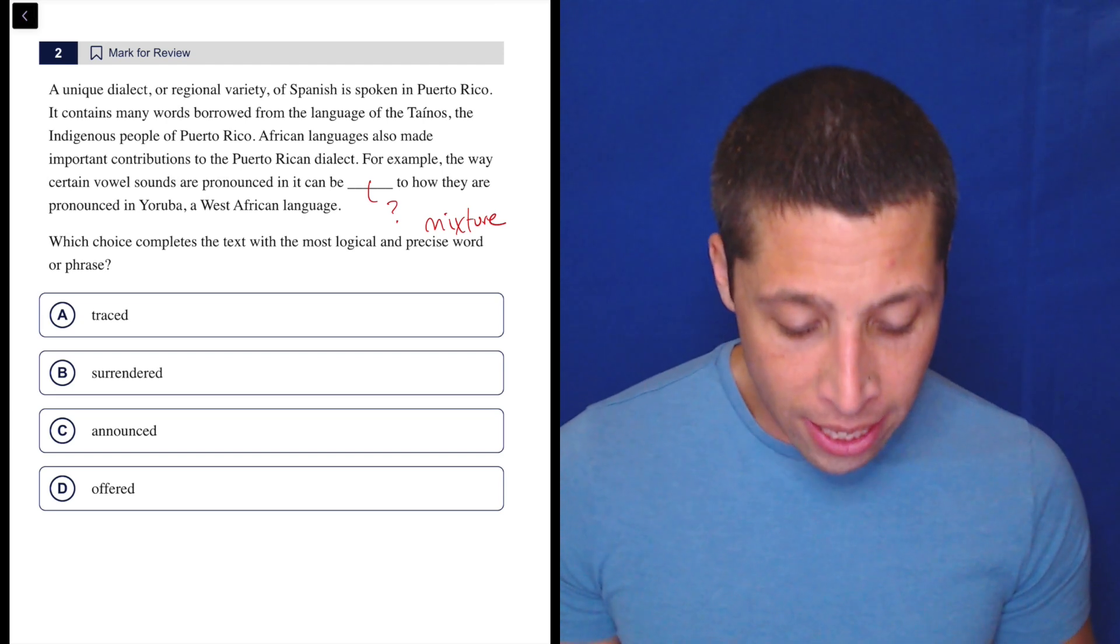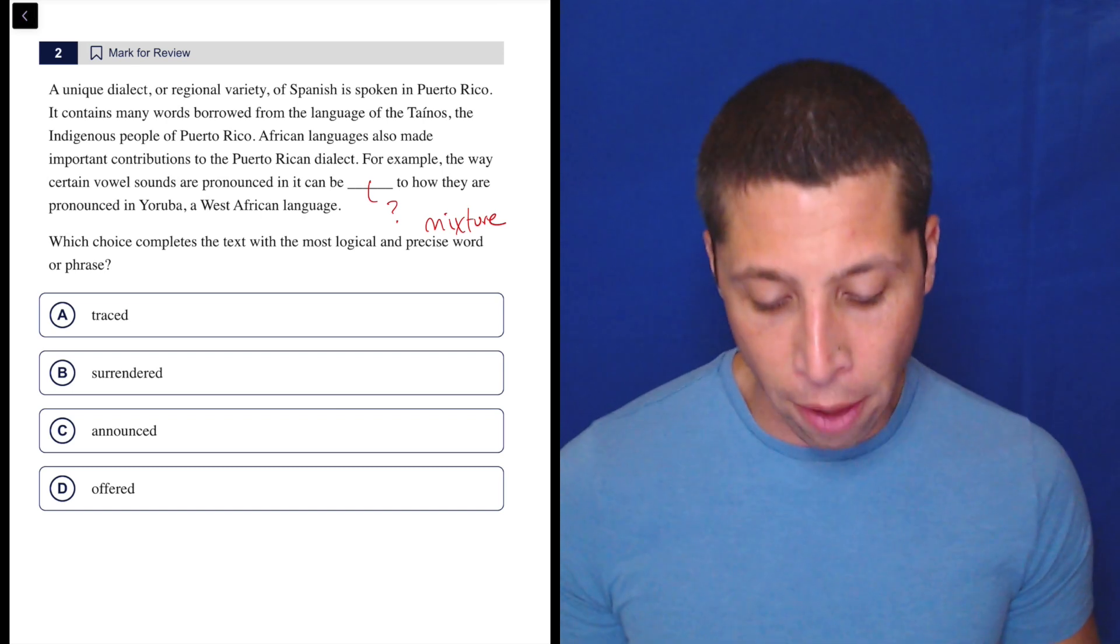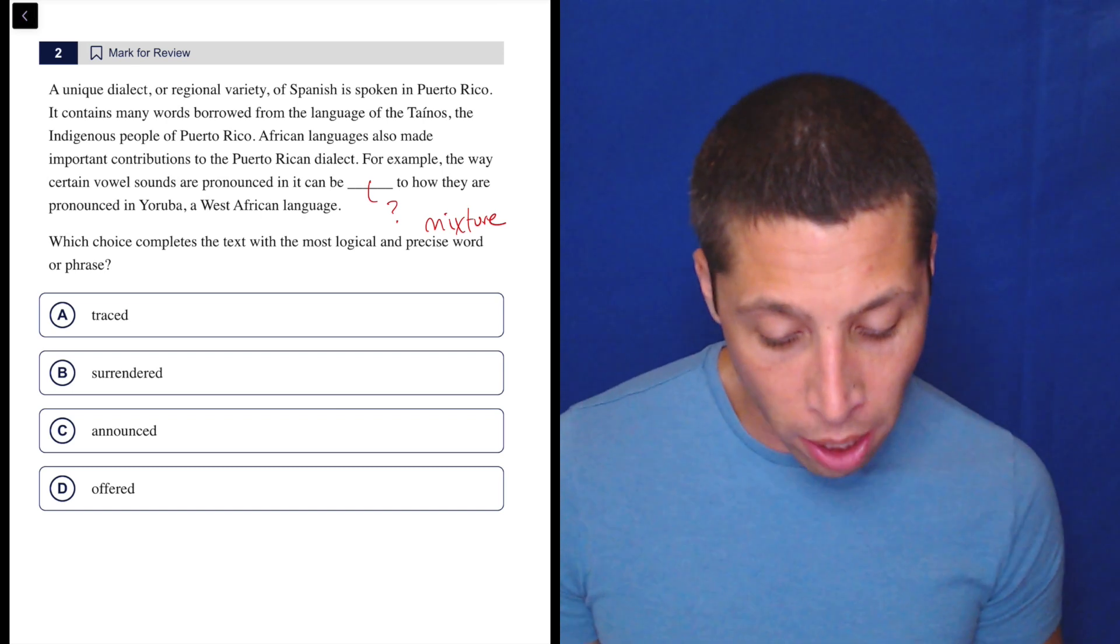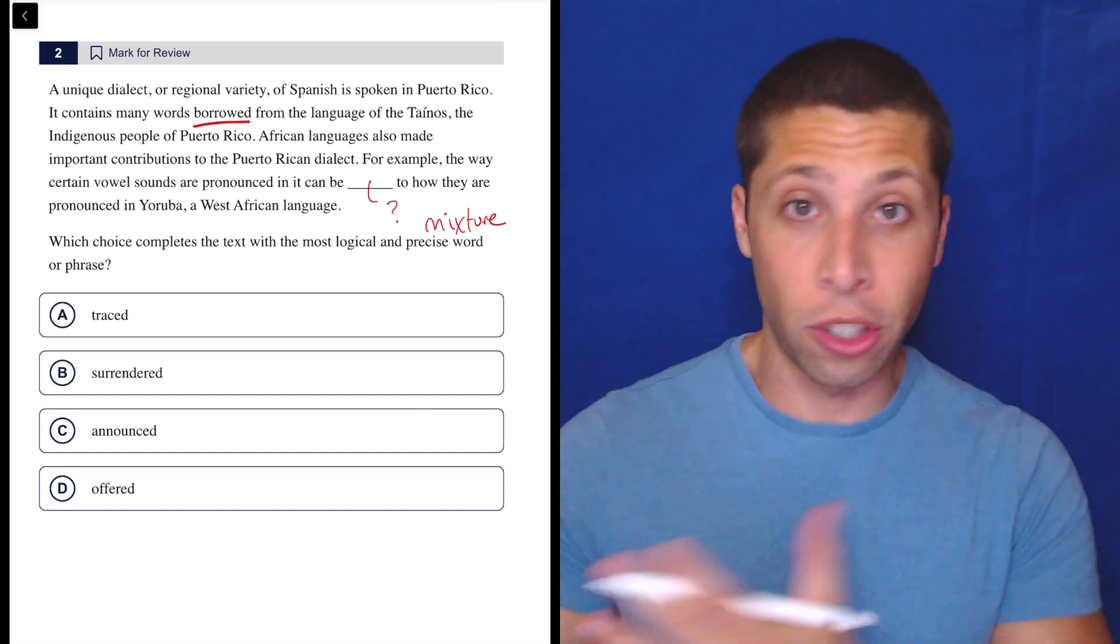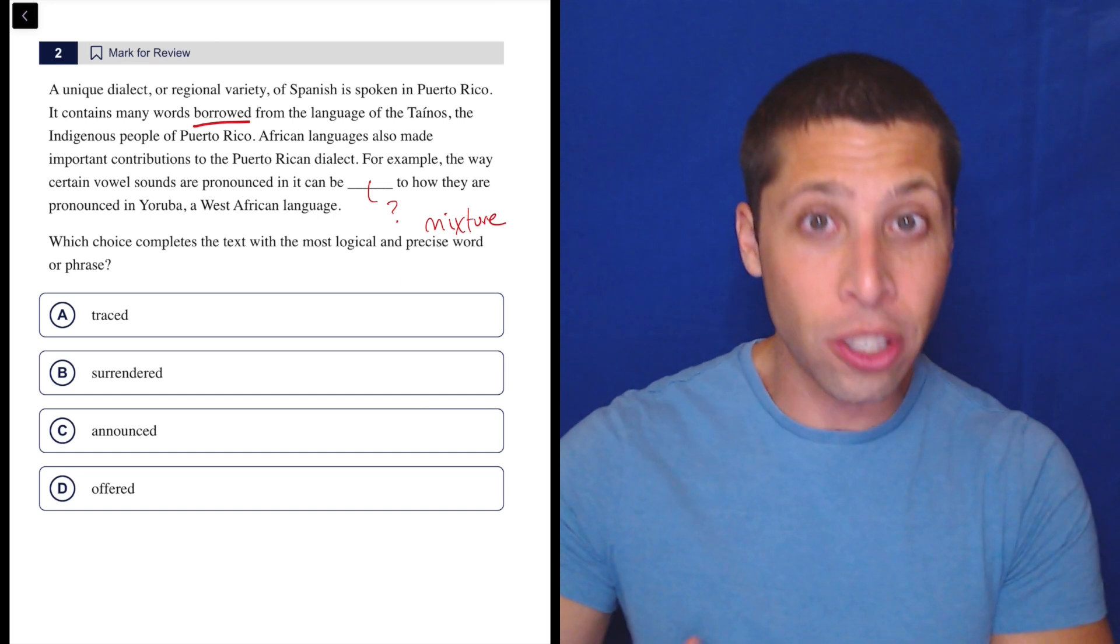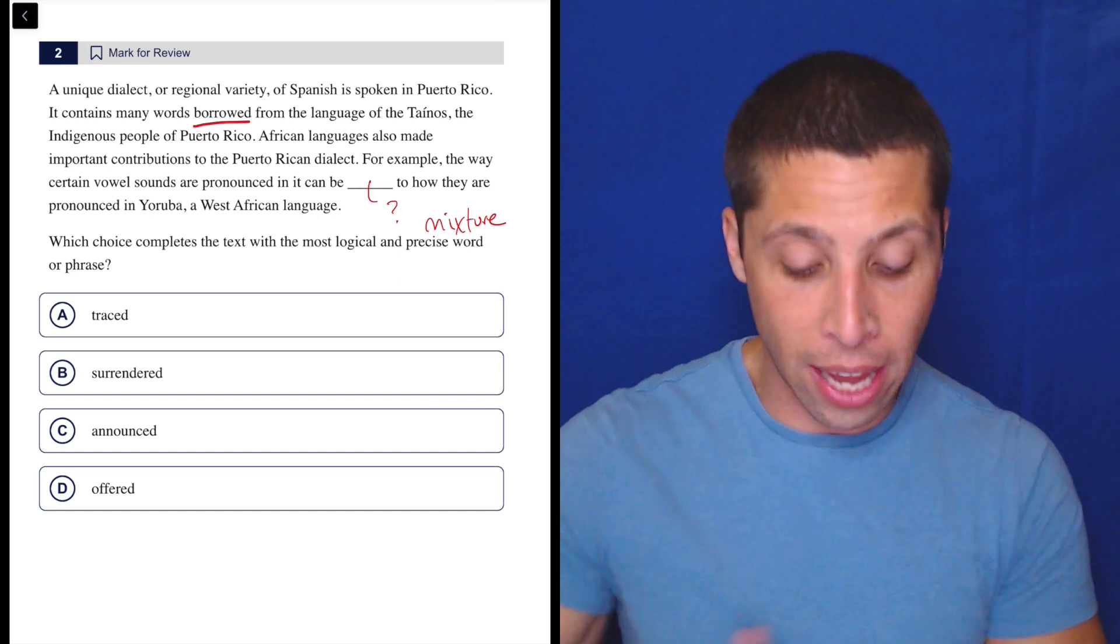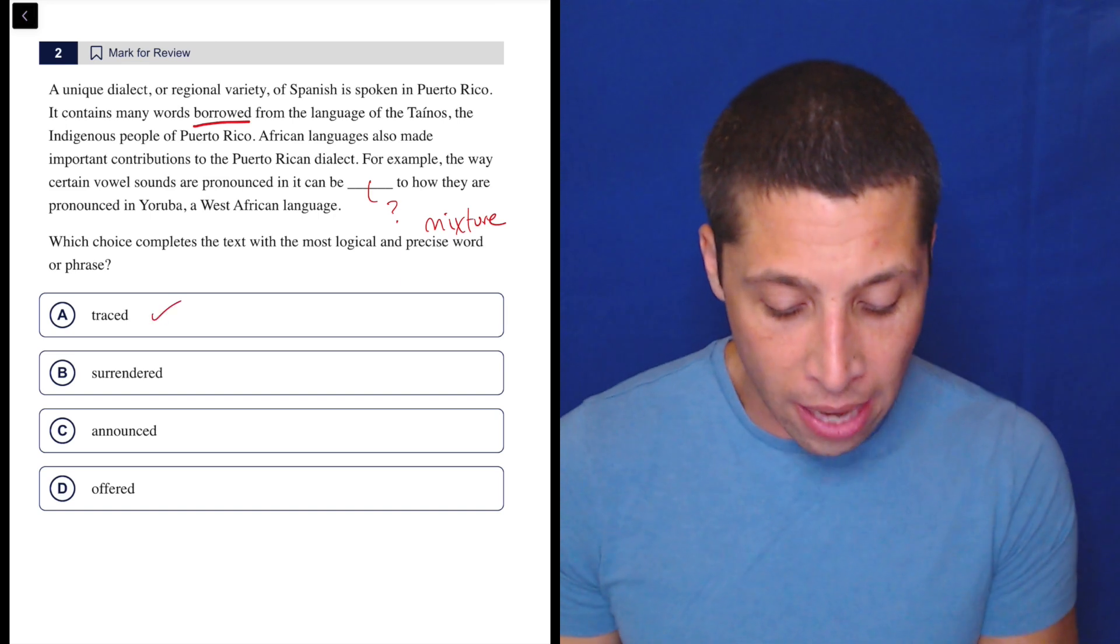The certain vowel sounds are pronounced in it can be traced to how they are pronounced in Yoruba, right? Because we're talking about things being borrowed from the Tainos. So there's some sort of origin there. And then something else is kind of originating from the West African language. So that seems to make sense.